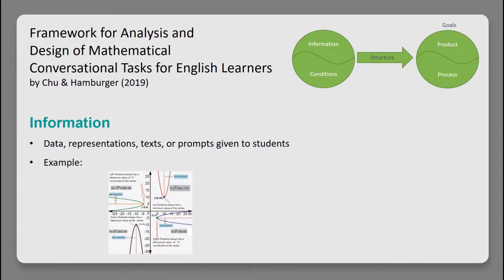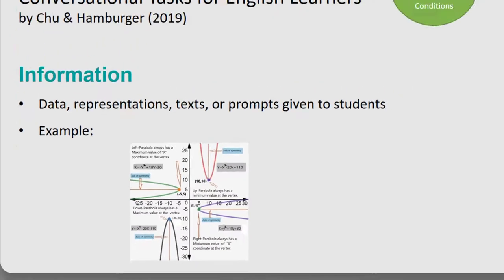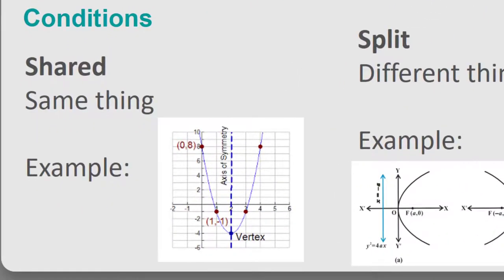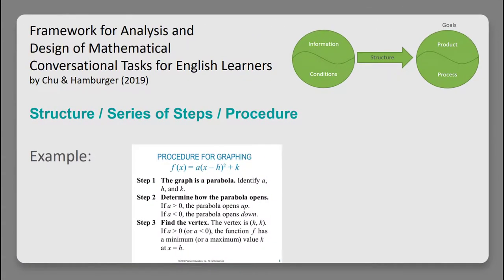Participants will need to draw upon the information they are given and follow the structure provided for them to take turns talking with one another. They begin with information — the elements within a task consisting of the data, representations, texts, or prompts given to students; for instance, carefully selected parabolas that may elicit categories. Within instructed settings, a task provides certain conditions for how students gain access to the information, identified as shared or split. In the shared condition, students are looking at the same thing — for instance, the same parabola and describing what they see. In the split condition, students are looking at different things and need to verbally explain what they see — for instance, looking at different parabolas and deciding how they are similar or different.